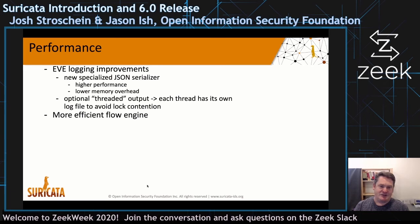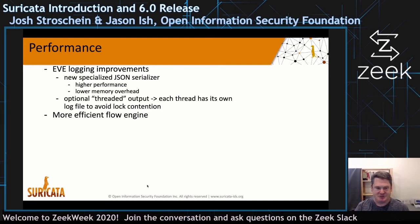We also added a threaded output to the EVE log, meaning each thread gets its own log file to avoid log contention, which was something we were able to measure. And there is a more efficient flow engine in terms of CPU performance and memory usage.